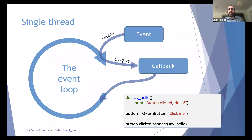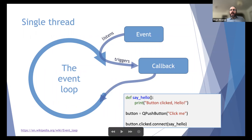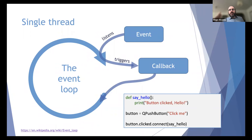Here's a Python/Qt example: a function called 'say_hello' that prints 'button clicked' to the terminal. We have a button with the text 'click me.' The magic is connecting the button to the function — saying that when the user clicks this button, the function say_hello should be executed. This is an event: the user clicking the button is the event, and the function being executed is the result of that event.